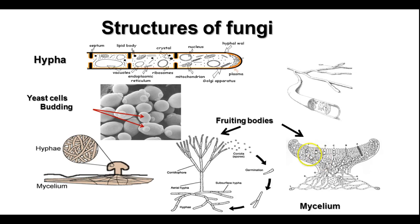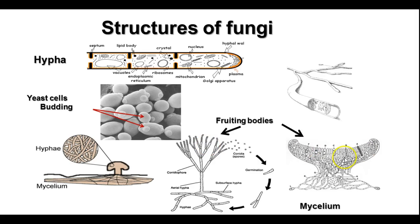There are different kinds of fruiting bodies depending on what kind of fungus you're talking about. One type is called conidia, which some kinds of molds produce. There's also a sac fungus called an ascus, and these are more like a cup fungus. So there are lots of different kinds of fungi.